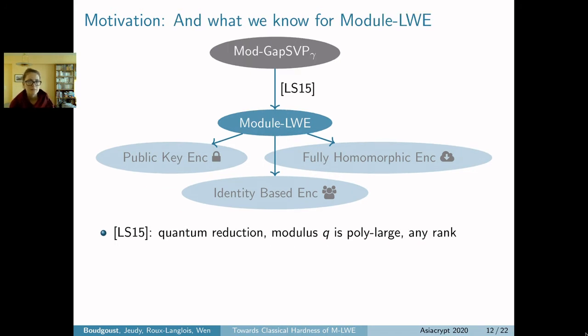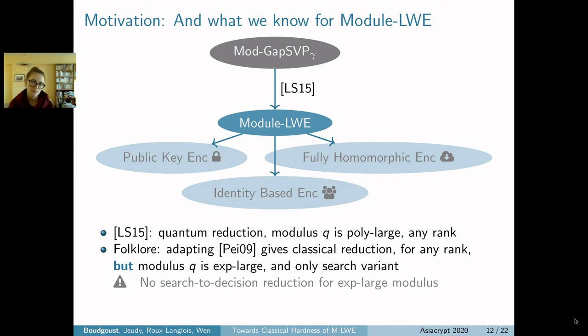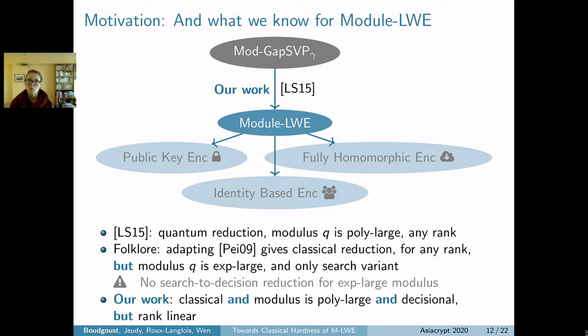The situation is slightly different for module-LWE. Langlois and Stehlé gave a quantum reduction where the modulus can be small and any rank. It was folklore that it should be possible to adapt Peikert's proof for module learning with errors with the expense of having a large modulus and only to the search variant, as there is no search-decision reduction for exponentially large modulus for module-LWE. Now comes our work. We thought, why could we not do the same as for LWE? We take the positive of both and show a classical reduction for small modulus and go down to the decisional variant, but with the expense of needing a linear rank.